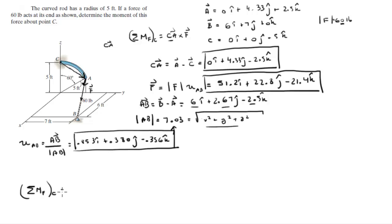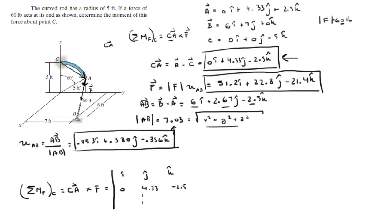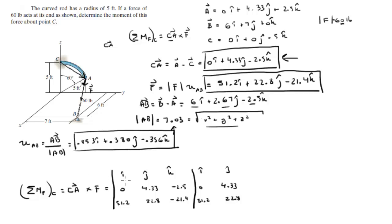Now that we have the Cartesian vector form of F, we can find the moment about C using CA cross F. We draw our matrix with i, j, k in the first row. Vector CA is 0, 4.33, negative 2.5 in the second row, and the force is 51.2, 22.8, negative 21.4 in the third row. Redrawing the first and second columns: 0, 4.33, 51.2, 22.8.